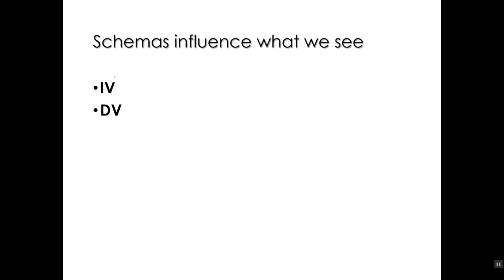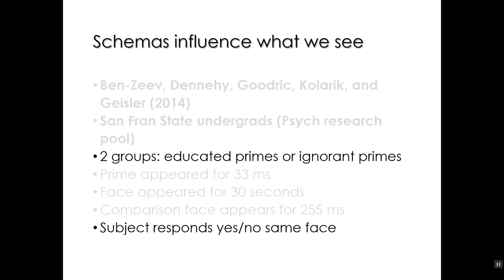Just as a test — what's the independent variable and what's the dependent variable? You may want to stop the video and answer it. Groups is a tip-off that we're talking about an independent variable: whether you received 'educated' as a prime or 'ignorant' as a prime. And the dependent variable is whatever is coming out of the subject — in this case, it's the response, yes or no, whether the face is the same face or not, whether they're correct or incorrect.